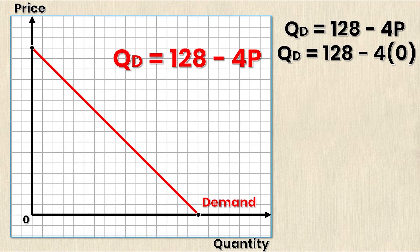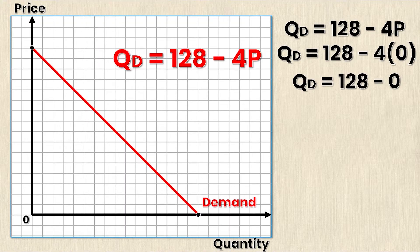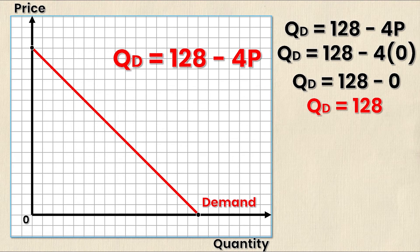I'm going to sub in a value of zero for P because at any point on the x axis or the quantity axis I know that price must be equal to zero. Simplifying further I get 128 - 0, which is just 4 times 0, and then finally Q_D must be equal to 128.